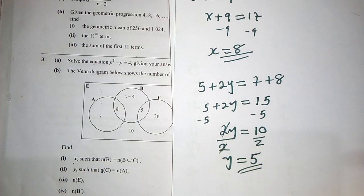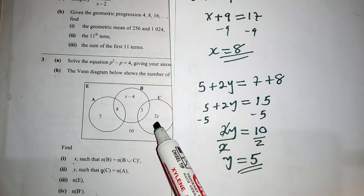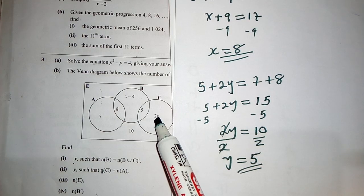And then we find the number of elements in E. We just add whatever we are able to see. And here where there is x, we put 5, which would turn to 10.